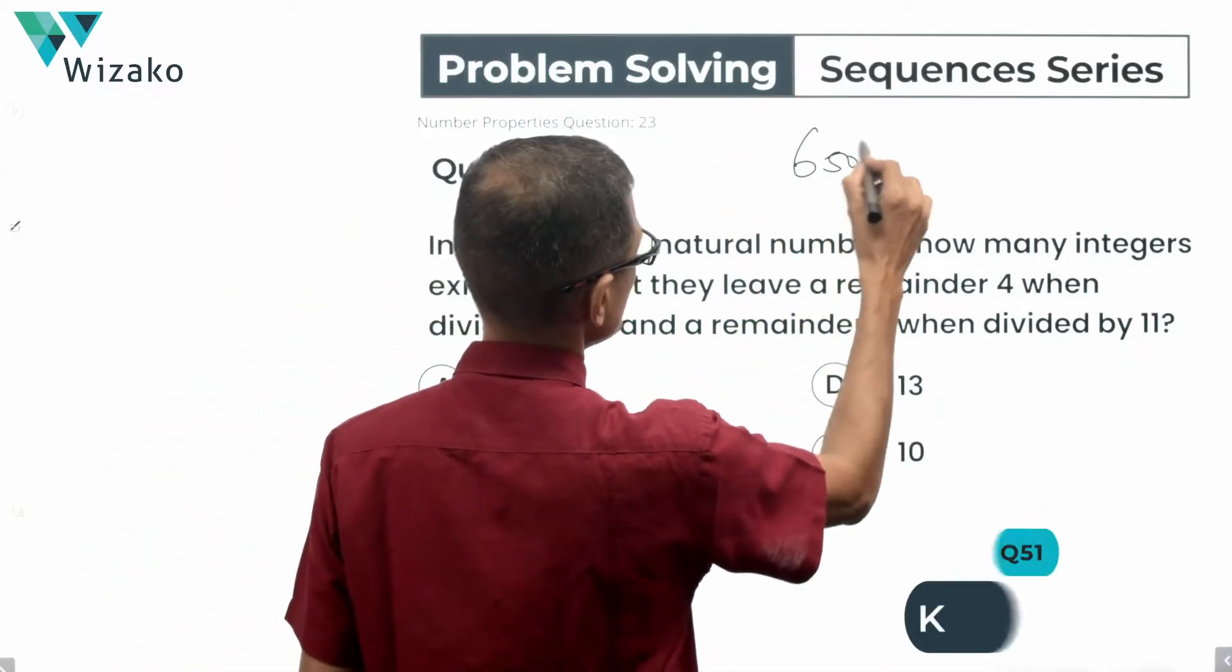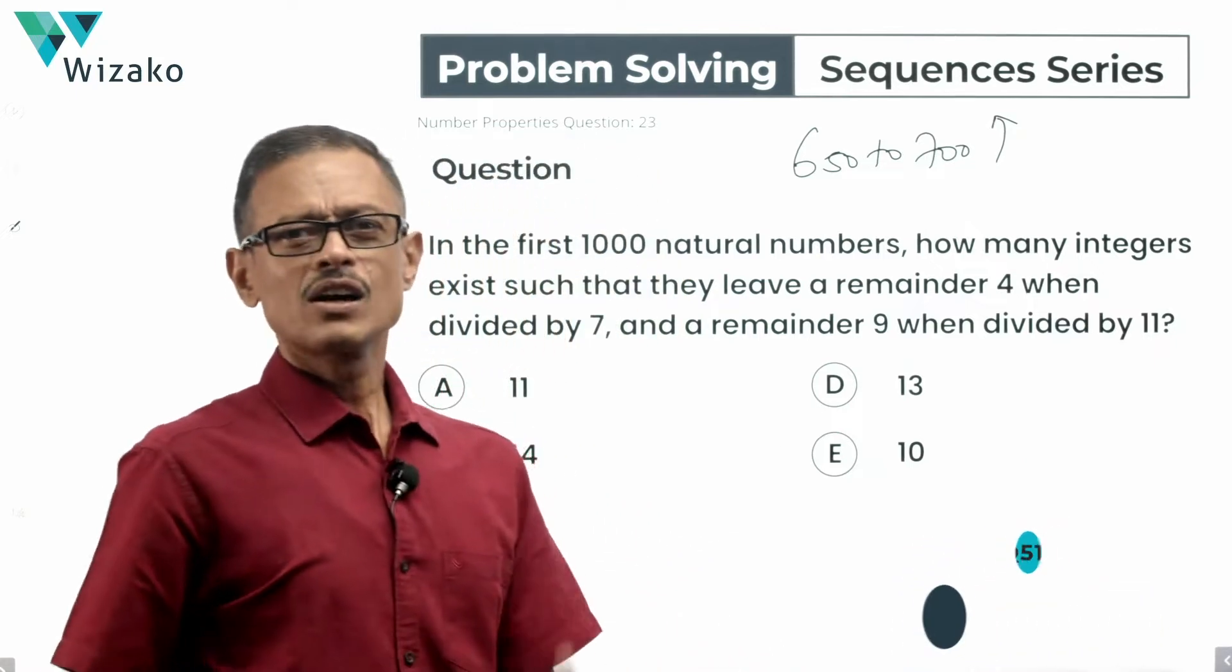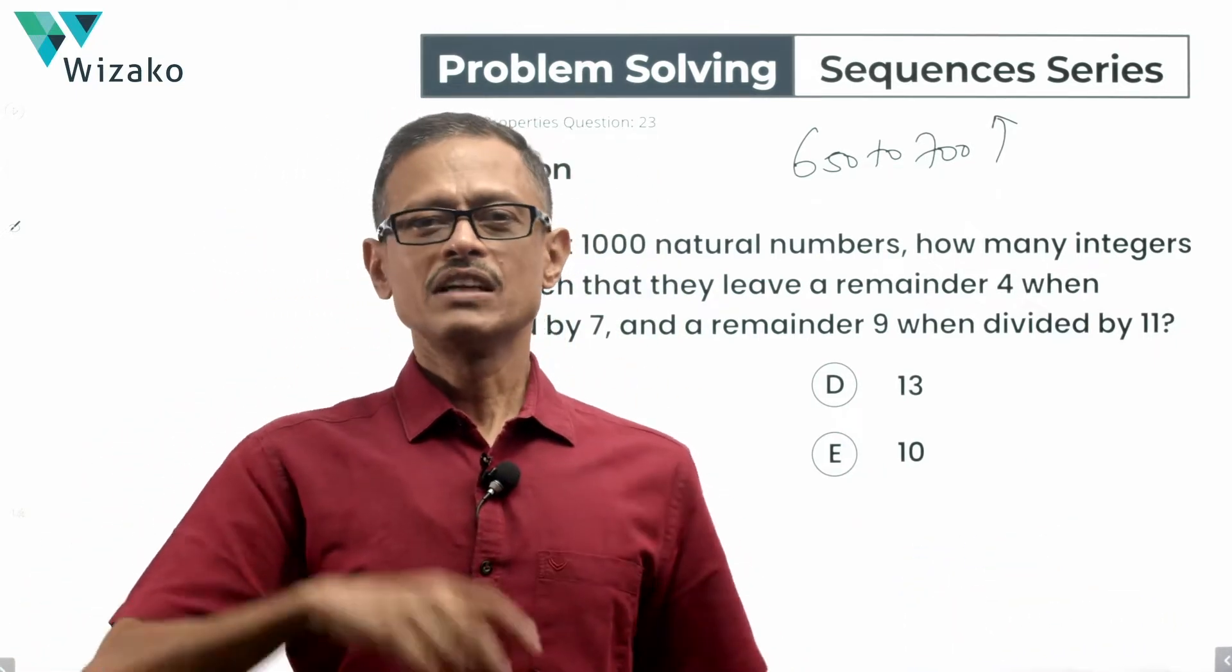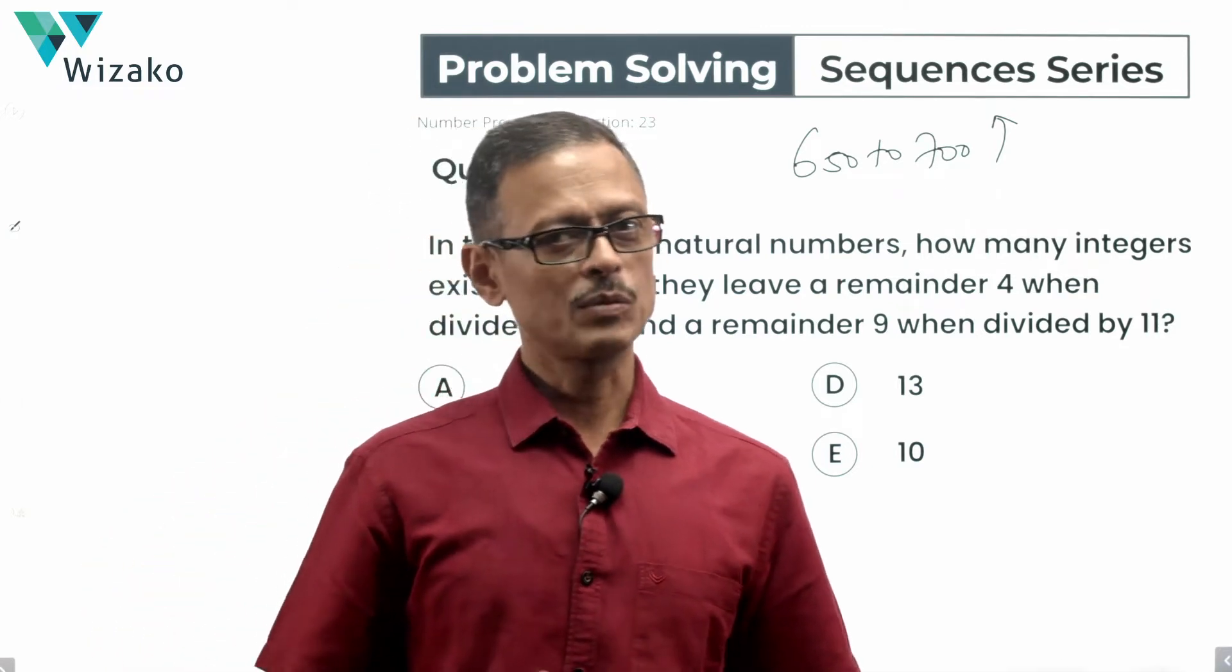Classify the question as a GMAT 650 to 700 level problem-solving question in sequences and series. Concept tested: sequence series, what kind of sequence it is, we will deduce it. We will also use some concepts from number properties, primarily concepts about LCM and number properties.